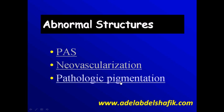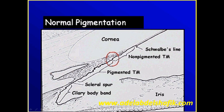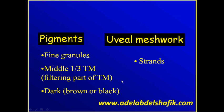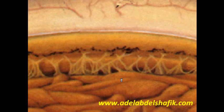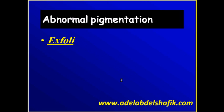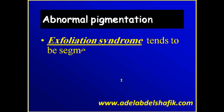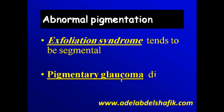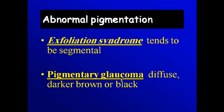The last thing to assess is the amount of pigmentation in the angle. Normally there is some pigment on the trabecular meshwork. Abnormal pigmentation can be found in exfoliation syndrome — heavy pigmentation segmented in areas of the circumference — while in pigmentary glaucoma there is diffuse pigmentation all over the angle.